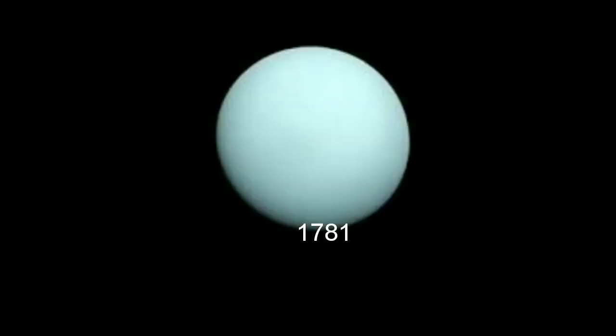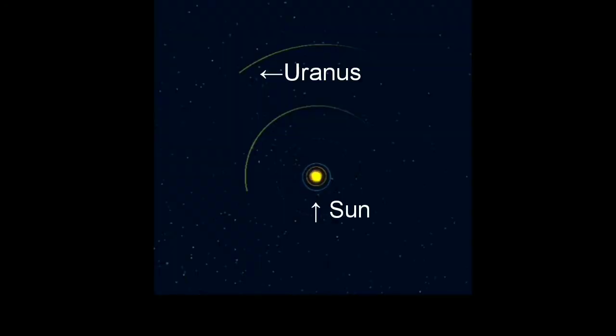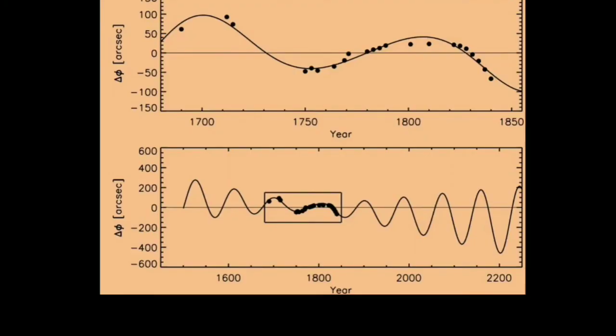1781 Uranus got discovered. Time to define the trajectory. Uranus was quite far away from the other planets and it was improbable that there will be some significant discrepancies. But guess what? There were discrepancies where it was not expected to show as there were no planets nearby. Then why was it so?